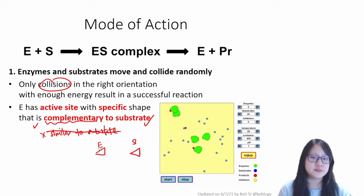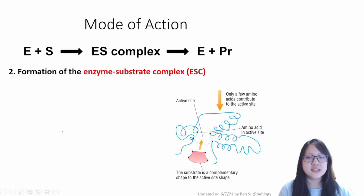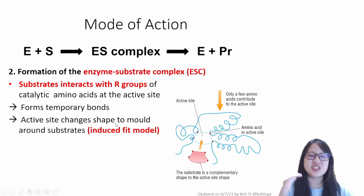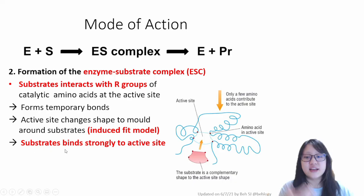That's the enzyme and substrate. Secondly, the formation of the enzyme substrate complex. So if it collides with enough energy in the right orientation, substrates would interact with R groups of the catalytic amino acids at the active site. They would form temporary bonds with those amino acids and the active sites. And the active sites would change shape to mold around the substances. This is the induced fit model that we just went just now. And basically, this forms the enzyme substrate complex. And as a result, the substrate is binding strongly to the active sites.